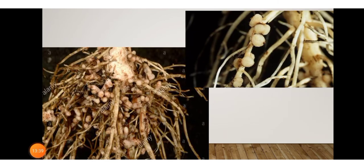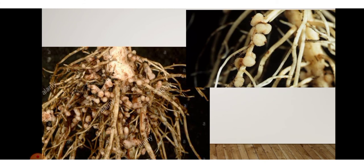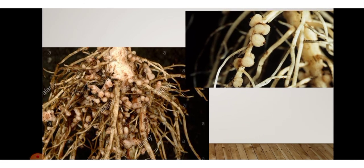Plants need nitrogen in a soluble form. The bacterium called Rhizobium — seen as node-like circular structures on roots — can take atmospheric nitrogen and fix it through a process called nitrogen fixation, converting it into a usable form.